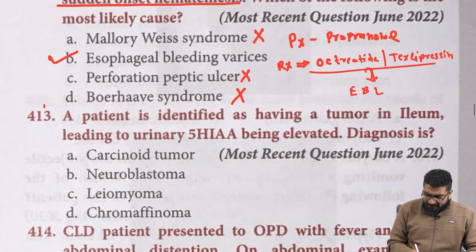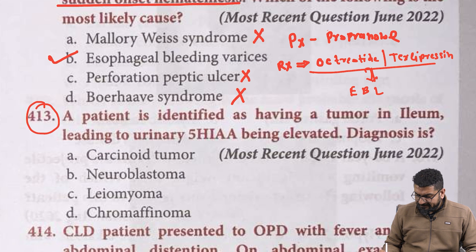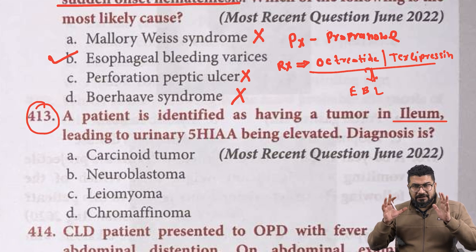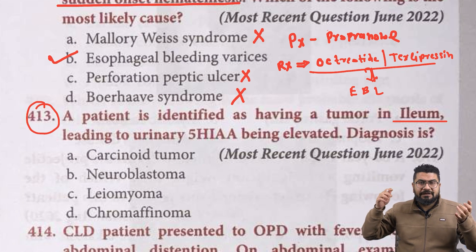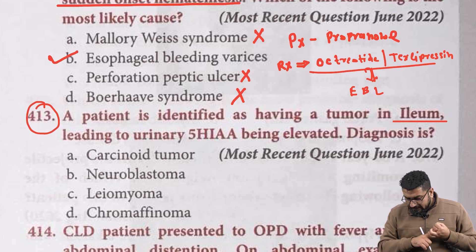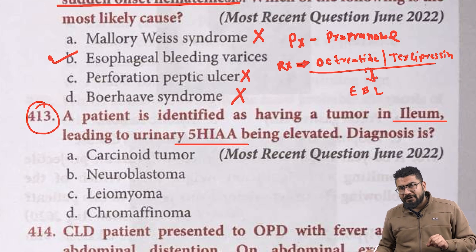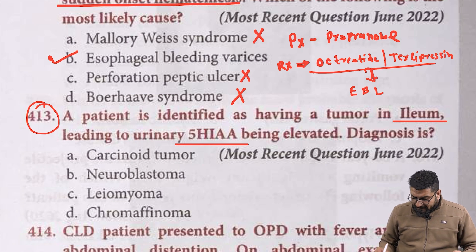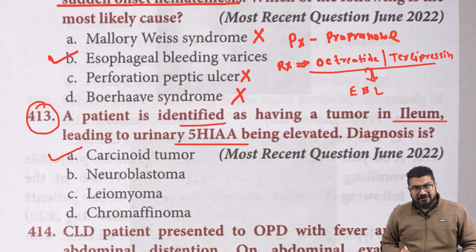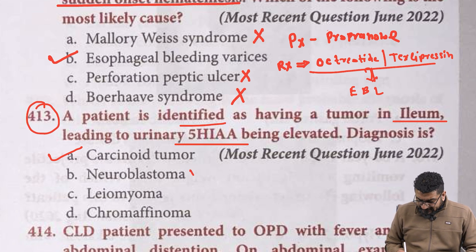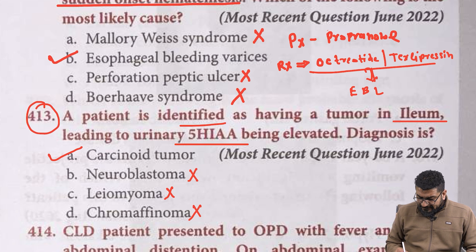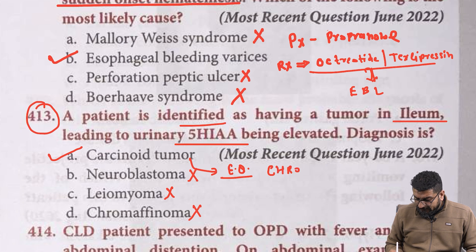Next question: a patient is identified as having a tumor in the ileum. Whenever the MCQ mentions ileum, think of carcinoid. A carcinoid in the ileum leads to elevated urinary 5-hydroxyindoleacetic acid (5-HIAA). This is a very frequently repeated topic in the FMG exam. In neuroblastoma you see elevation of VMA; leiomyoma is the most common benign GI tumor. The answer is carcinoid, and in blood the marker is chromogranin.